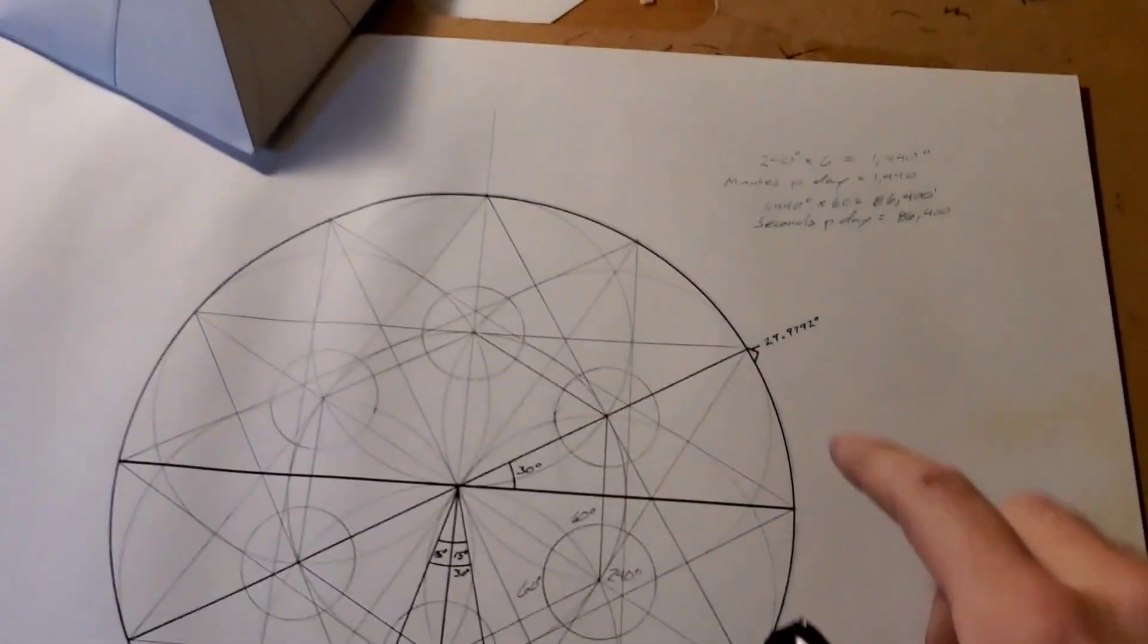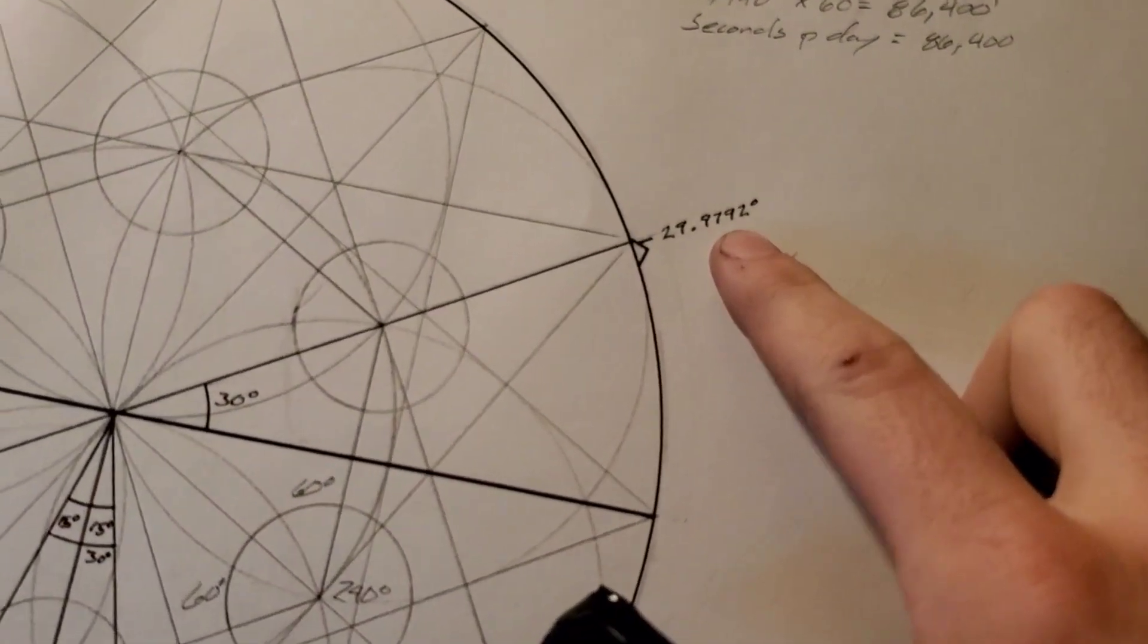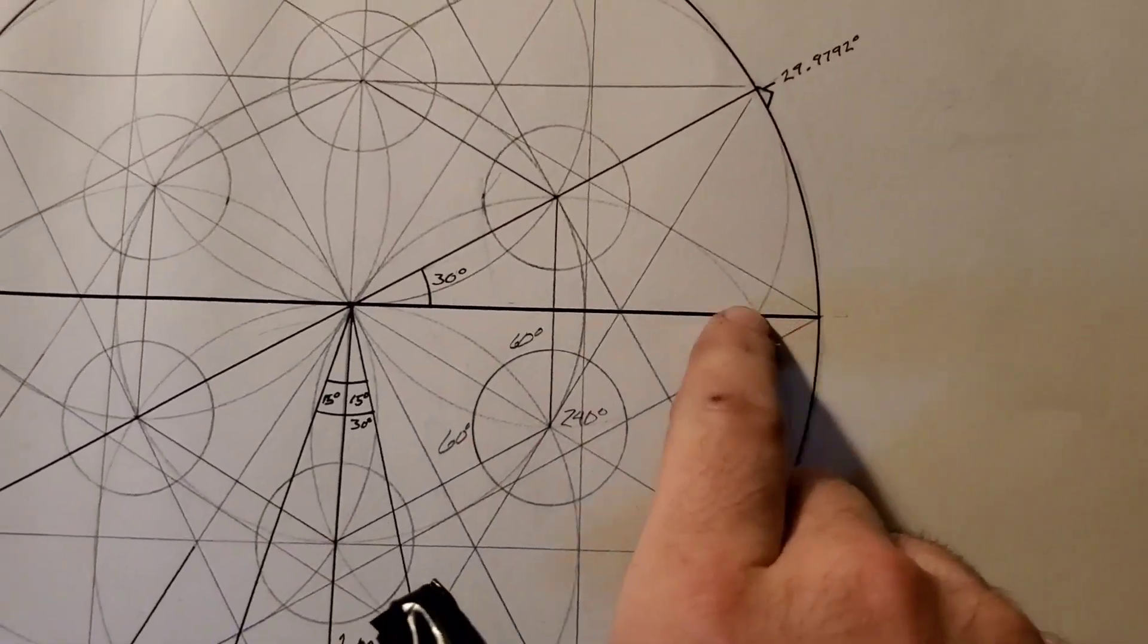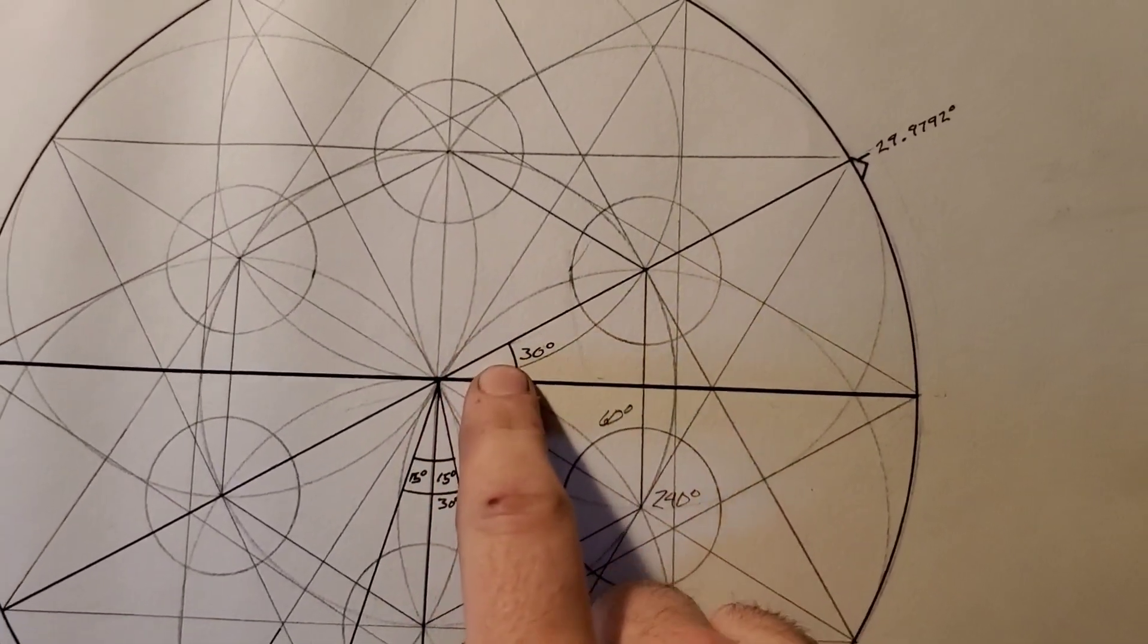30 degrees also shows up a lot as well. The Great Pyramid is located 29.9792 degrees north from the equator of the planet, which is really, really close to 30 degrees.